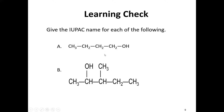For example B, our longest chain: one, two, three, four, five — pentane. Drop the E, add OL: pentanol. Because the OH is coming at the second carbon, this becomes 2-pentanol. There's also a group at carbon three — a one-carbon group, so it's methyl. This is now 3-methyl-2-pentanol.